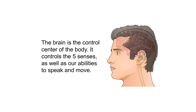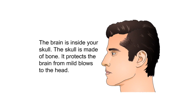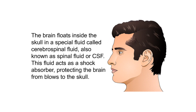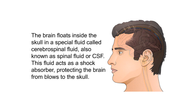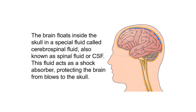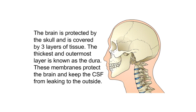Anatomy of the brain. The brain is the control center of the body. It controls the five senses as well as our abilities to speak and move. The brain is inside your skull, which is made of bone and protects the brain from mild blows to the head. The brain floats inside the skull in a special fluid called cerebrospinal fluid, also known as spinal fluid or CSF, which acts as a shock absorber.